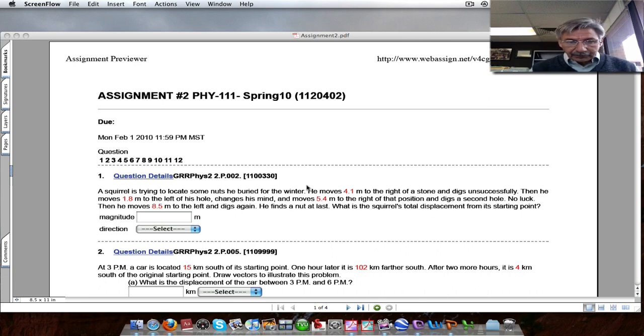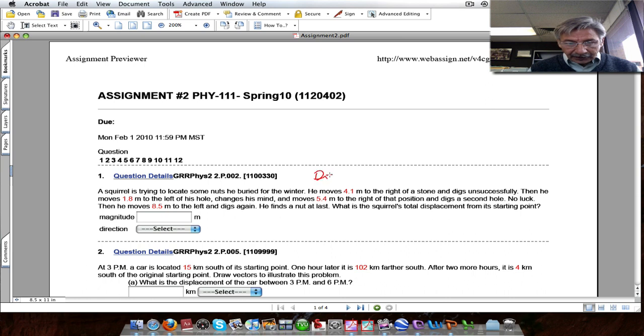Problem number one is a problem about displacements. There is first a displacement to the right of a certain amount. In this particular case is 4.1. Then there is a displacement to the left. Then there is from here another displacement to the right. And then finally there is another displacement to the left. And the question is what is the total displacement from the origin? So that is going to be this quantity. So it's going to be to the right if this point is to the right. But if this point ends up here then it will be to the left.